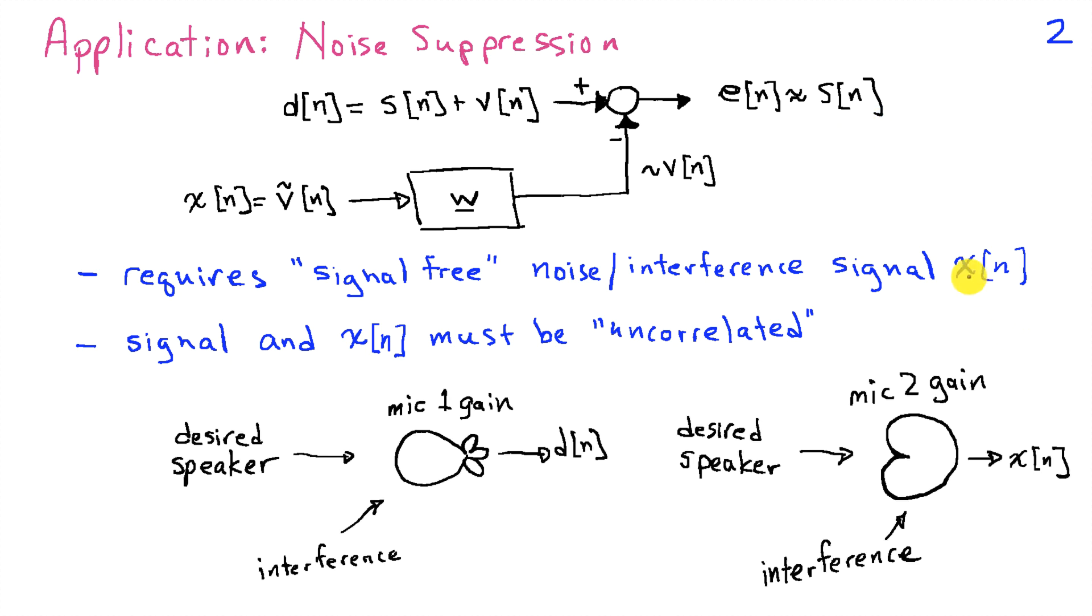So here's one scenario in which a noise suppression application would be applied, and that is a case where we have, say, two microphones. One of the microphones is pointed at a speaker that we're interested in listening. So this signal coming from the desired speaker here is s of n, and there's some noise in the background that's coming from some other direction and arriving at the microphone.